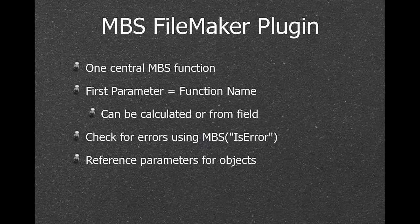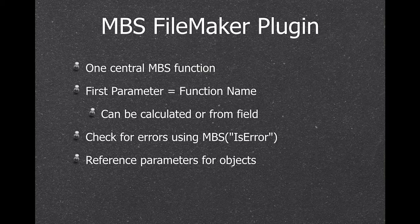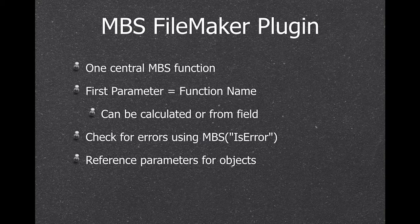Imagine how your calculation dialogue would look with 4800 entries from the plugin — FileMaker itself has about 300 to 400 functions, so the dialogue would be very full. We decided to make one function only, where the first parameter is the function name you want to call. We have a dispatcher that looks up the function. The function name can be a calculation or come from a field, so some people offer context menus where they select a graphical effect and the menu entry name becomes the function called.